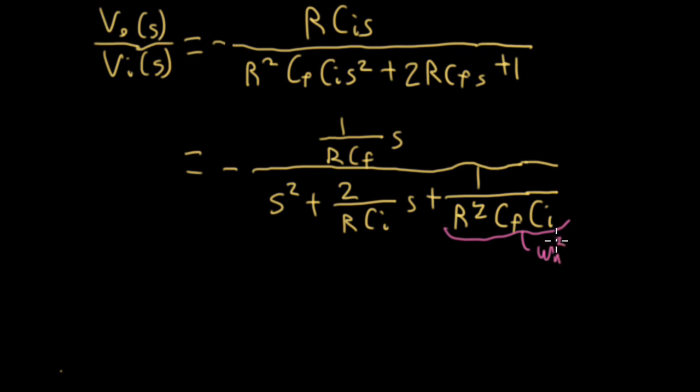The last term in the denominator here is omega n squared, where omega n is the natural frequency. The natural frequency for a bandpass filter is, in fact, the peak frequency. So omega n is equal to 1 over R times the square root of CF, CI.